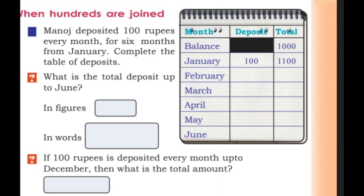When hundreds are joined: Manoj deposited 100 rupees every month for 6 months from January. The months are January, February, March, April, May, June — that is 6 months. Each month, 100 rupees is deposited. So the January total is 100.